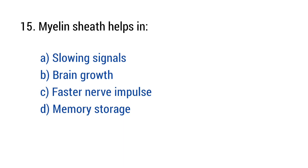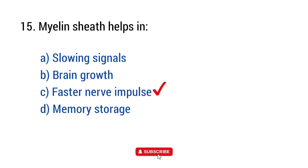Question number fifteen. Myelin sheath helps in. The right answer is option C: Faster nerve impulse.